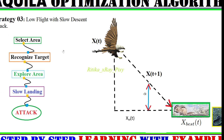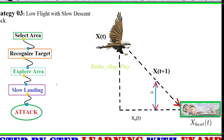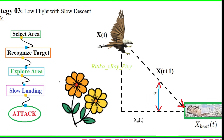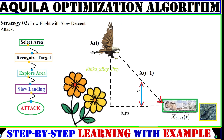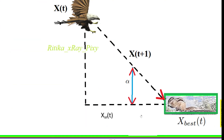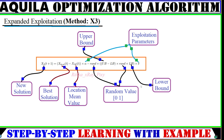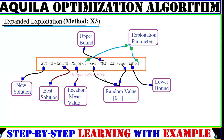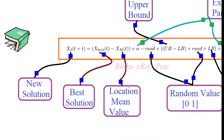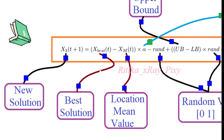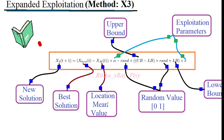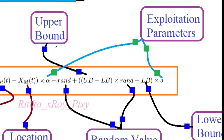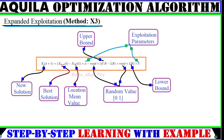The third strategy is low flight with slow descent attack. In this method the target area is accurately recognized, then Aquila attacks and lands on the prey's neck or back, penetrating its talons into the target body. In the mathematical model, the new solution again uses the best solution as the target. The location mean value is the mean of all agent values, UV is the exploitation parameter upper bound, LV is the lower bound, and rand is the normally distributed random value.